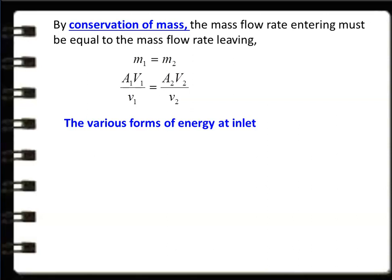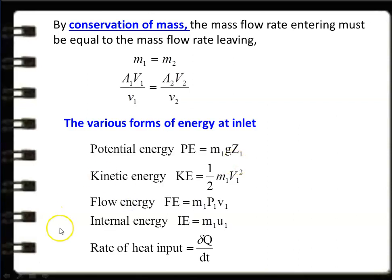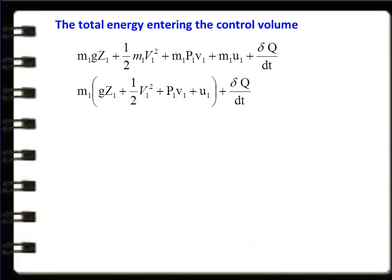The various forms of energy at the inlet that we consider for the derivation of the steady flow energy equation are: potential energy M1·g·Z1; kinetic energy ½·M1·V1²; flow energy M1·P1·V1; internal energy M1·U1; and rate of heat input dQ/dt. Taking the total energy entering the control volume — summing potential, kinetic, flow, and internal energy — with M1 as a common factor, we get: M1·(g·Z1 + ½·V1² + P1·V1 + U1) + dQ/dt.